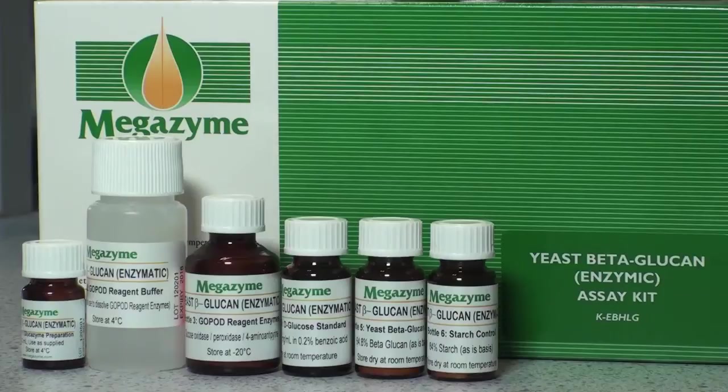Kits suitable for performing 50 assays are available from Megasyme. The kit contains the full assay method plus Bottle 1, which is glucosyme enzyme preparation, a mixture of enzymes active on beta-glucan, and Bottle 2, GOPOD reagent buffer.